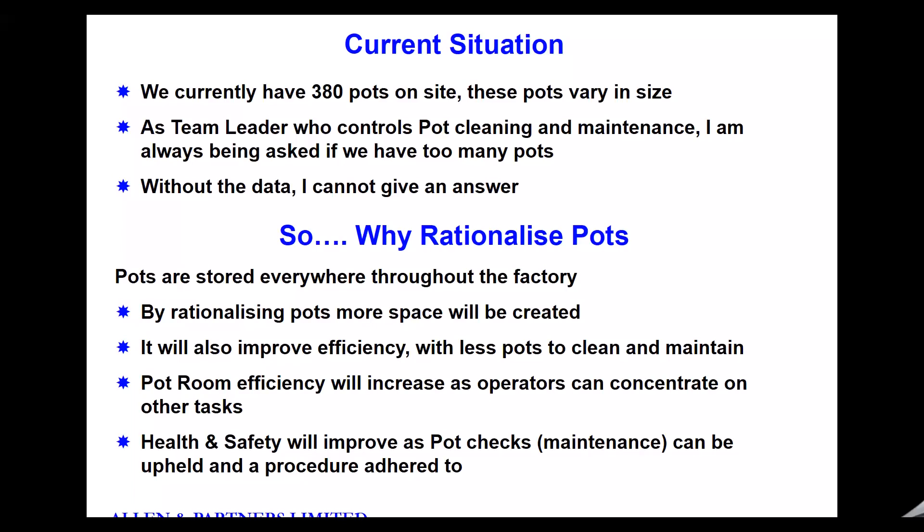The current situation: this is an ink manufacturing company. Currently they have 380 pots on site that they use to mix the ink in — all various sizes. The ink gets mixed in a pressurized situation, so they have to be inspected and maintained. They've got wheels on the bottom as part of the process. Currently, those 380 pots are spread all over the factory. Pots are stored everywhere — they don't know where they are. When they come to clean or maintain them, they have to go and find them. So there's lots of searching time and lost capacity.